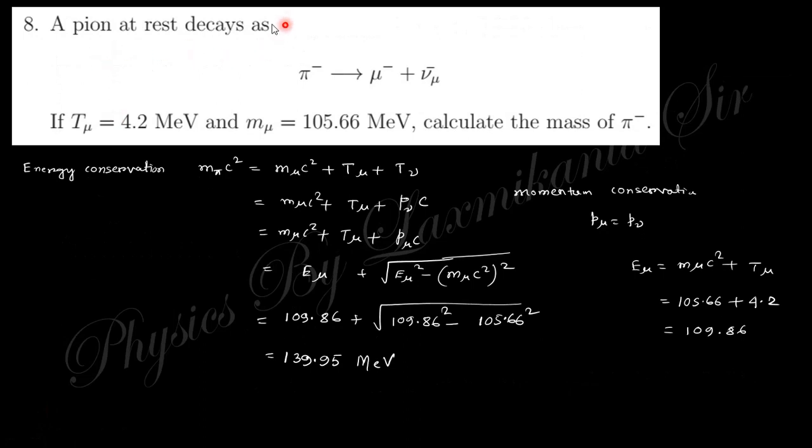Next, pion at rest as this one. This is the pion decay. The kinetic energy of the muon is like that and mass of the muon is this, so you need to find out the mass of the pi minus. So from energy conservation you can say this is actually at rest and moving with this one, so the total energy of this pion is equal to total energy of muon plus there is no rest mass of neutrino.